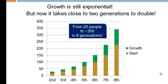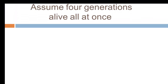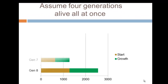Growth is still exponential with a fertility rate of three, but now it takes closer to two generations to double. In this model, as long as fertility is above two, growth will be exponential and will get higher and higher with each passing generation.